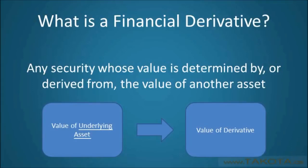An underlying asset can take many forms, but it commonly refers to stocks, bonds, commodities, currencies, interest rates, and market indexes. The most important thing to take away from our discussion of derivatives so far is that their value depends upon the value of something else — the underlying asset. So, a change in the value of a derivative's underlying causes a change in the value of the derivative itself.